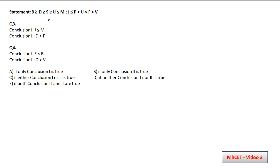Let's take another variety. The first statement is: B ≥ D ≥ S ≥ U ≤ M. The second statement is: J ≤ P < U > F > V. Now, how do we proceed here?